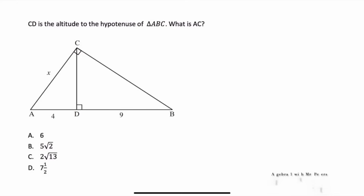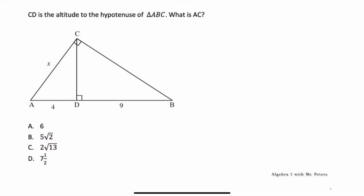What's good math family? In today's video, we're going to look at the geometry EOC and common problems you'll see on this exam. In problem number one, it says that CD is the altitude to the hypotenuse of triangle ABC, and they're asking us to identify what is AC.